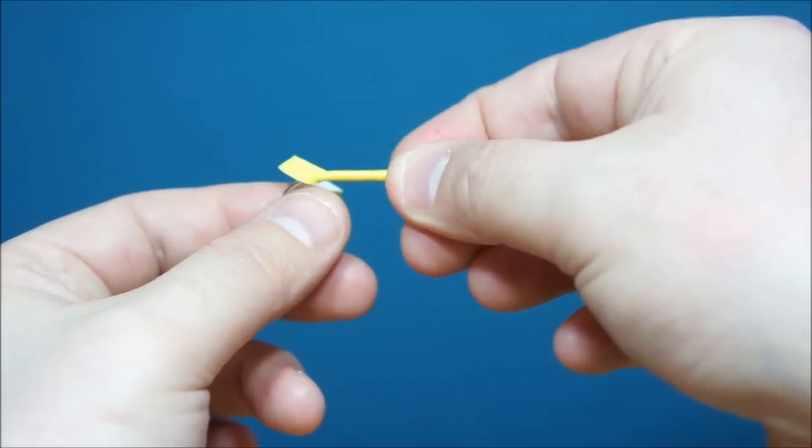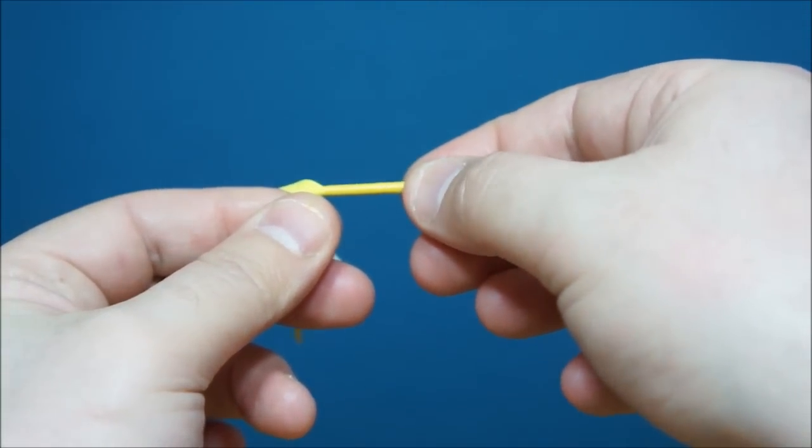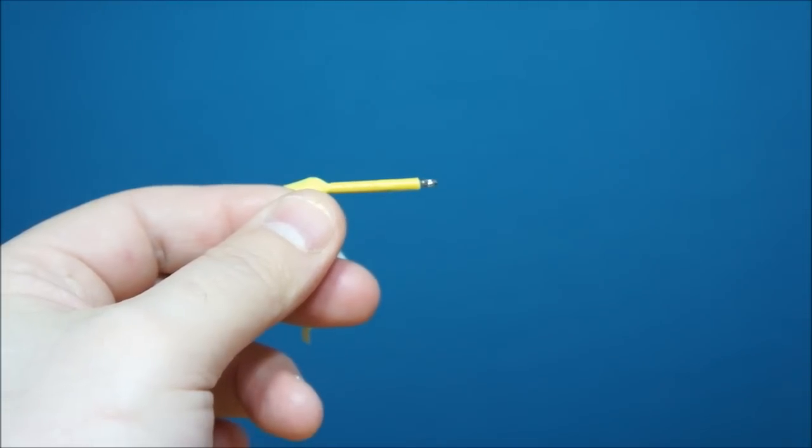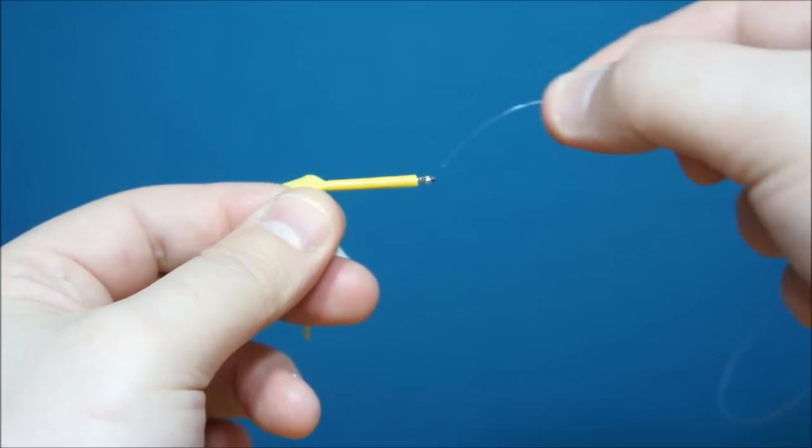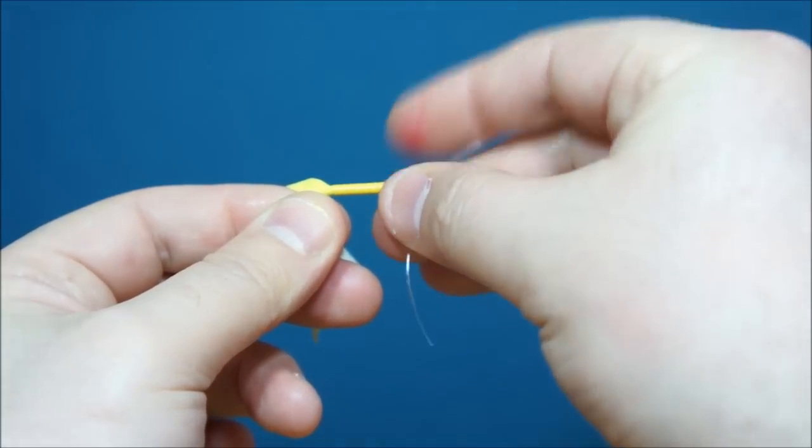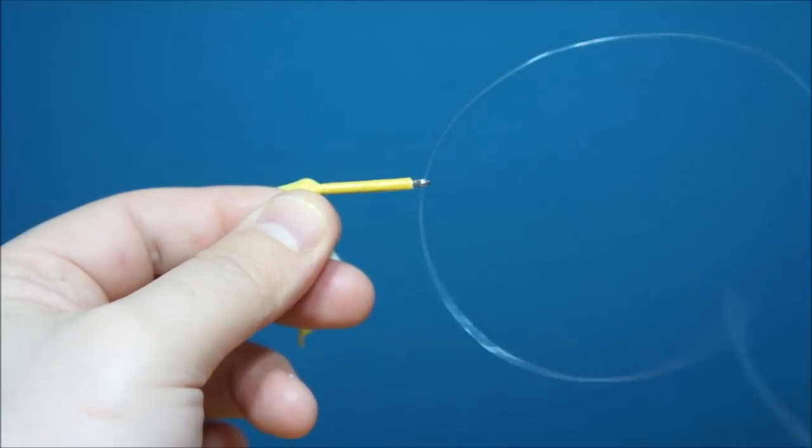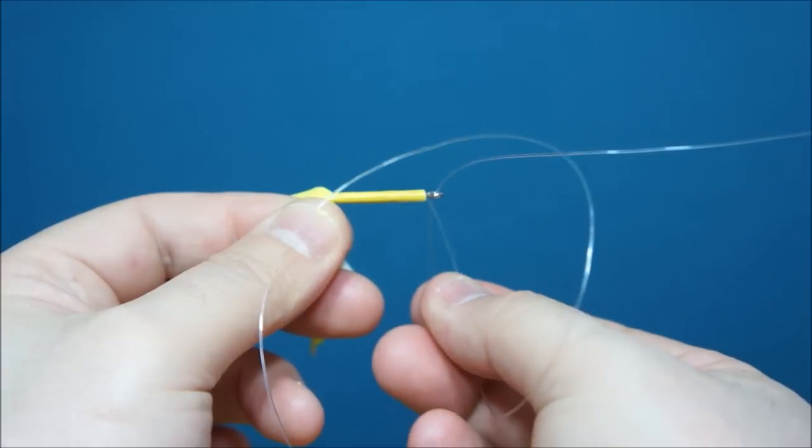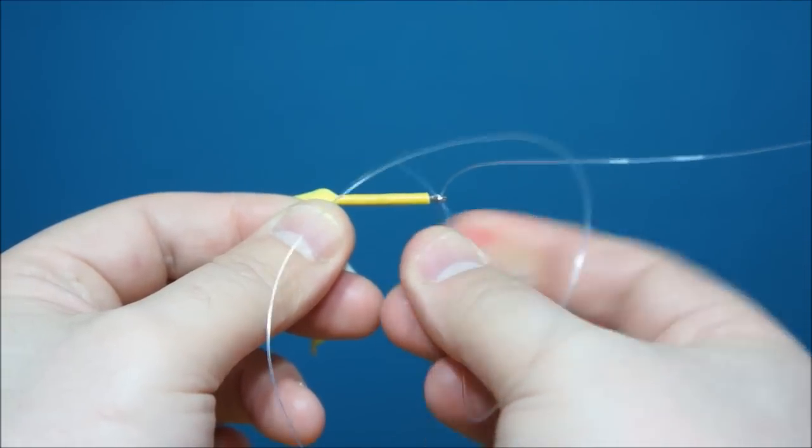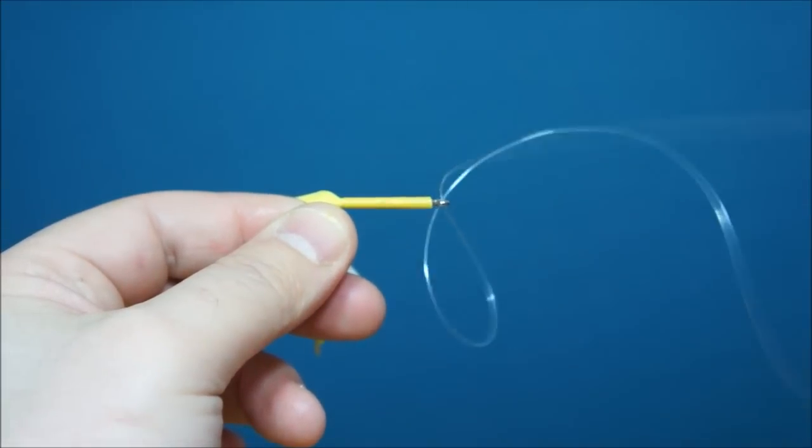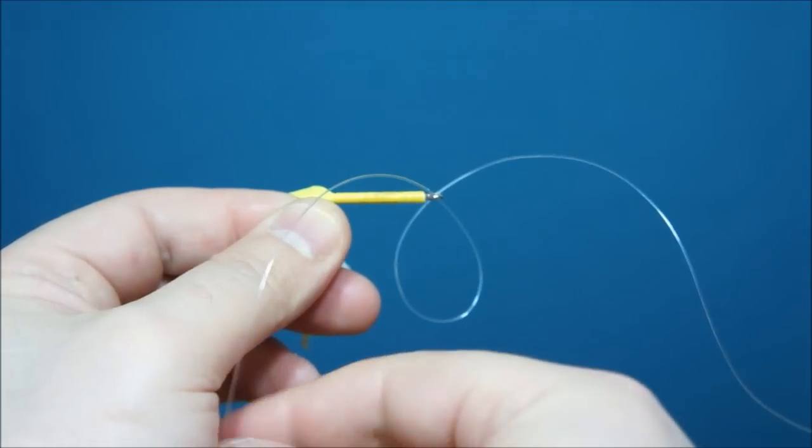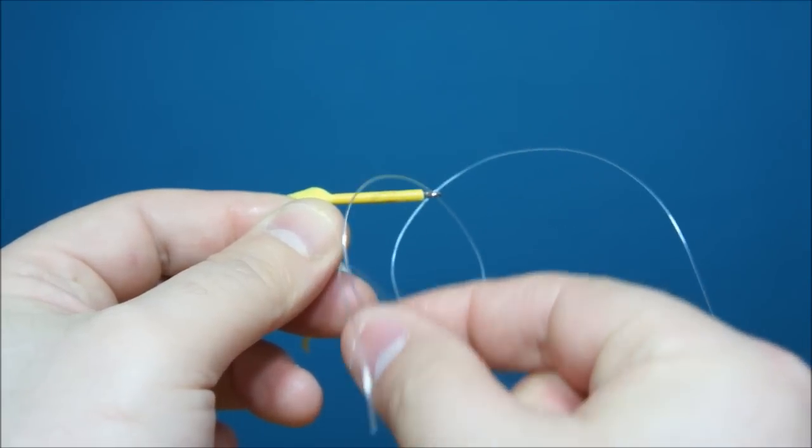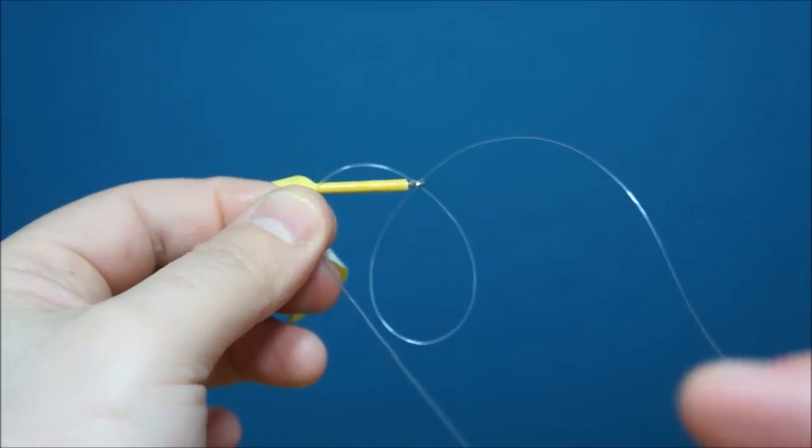So once I'm happy that the tail and the tape are firmly attached to the hook I'm going to place it in my fingers and then begin to tie the knot and create the snood. To do that I'm going to take 200 to 300mm of line and thread it through the top of the eye. And then back through the bottom. And that's going to give me a loop.